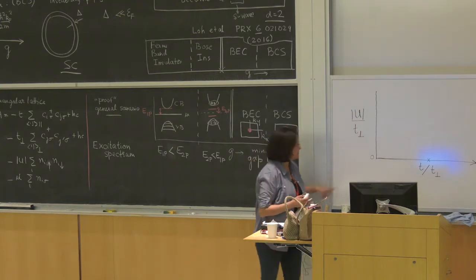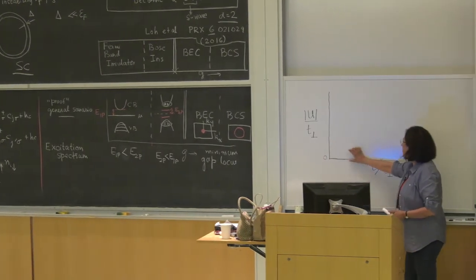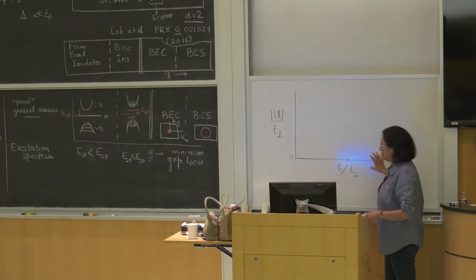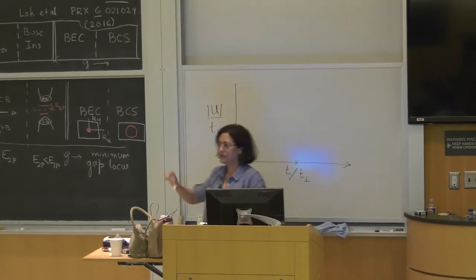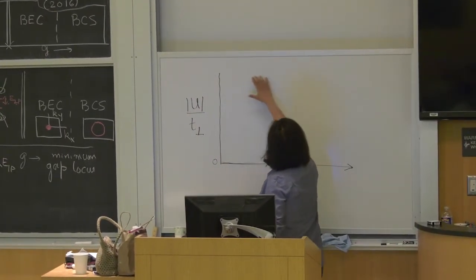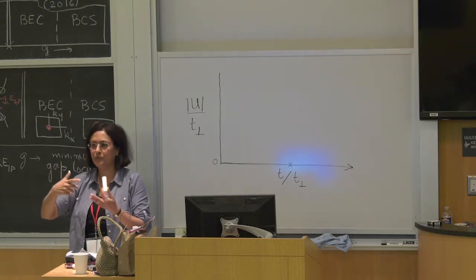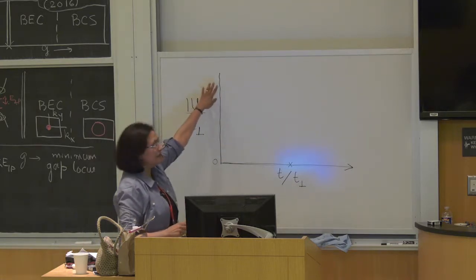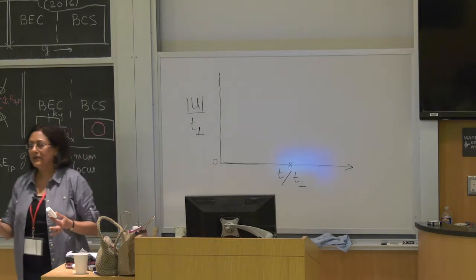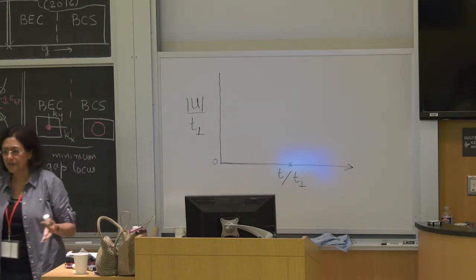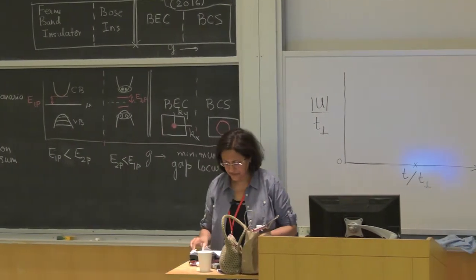At very small U you can use a diagrammatic mean field theory. On the vertical axis, you can assume T is zero — more like an atomic or rung limit. At extremely large U, the attraction leads to a bosonic object, a tightly bound Cooper pair — that's a bosonic calculation. In the middle where all energy scales are comparable, you have to turn to something non-perturbative, and quantum Monte Carlo is the method of choice. Applying all these different methods, we can get the phase diagram.